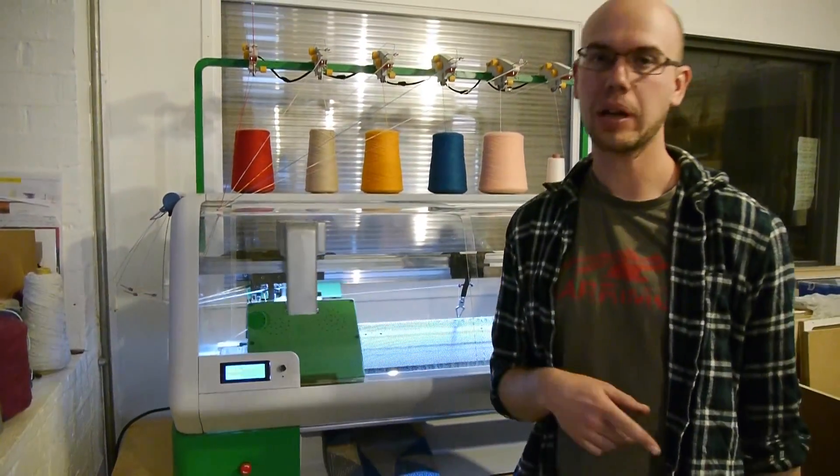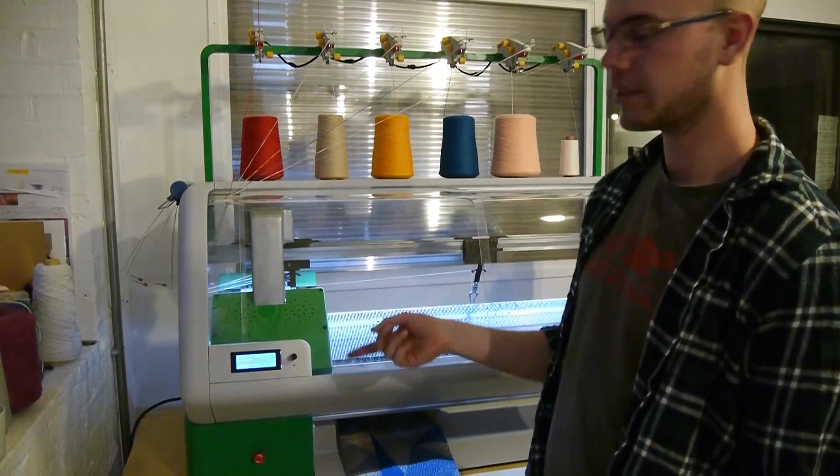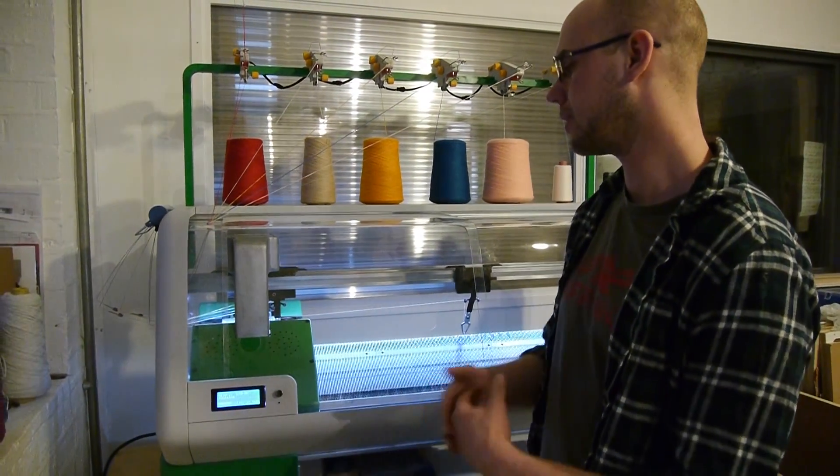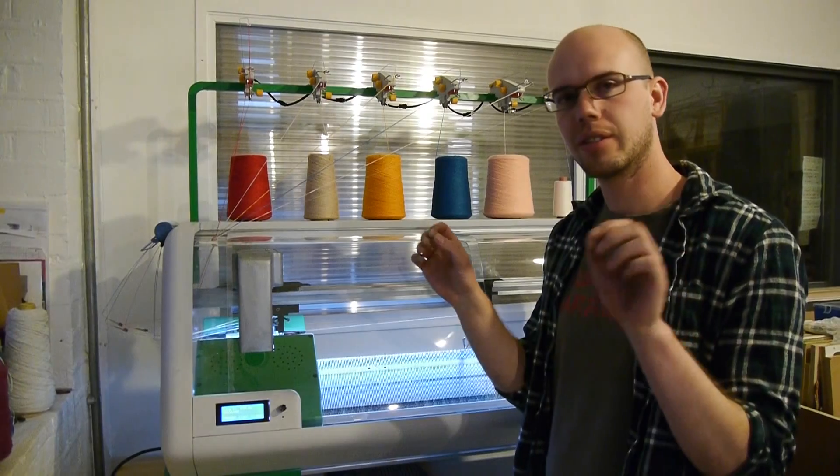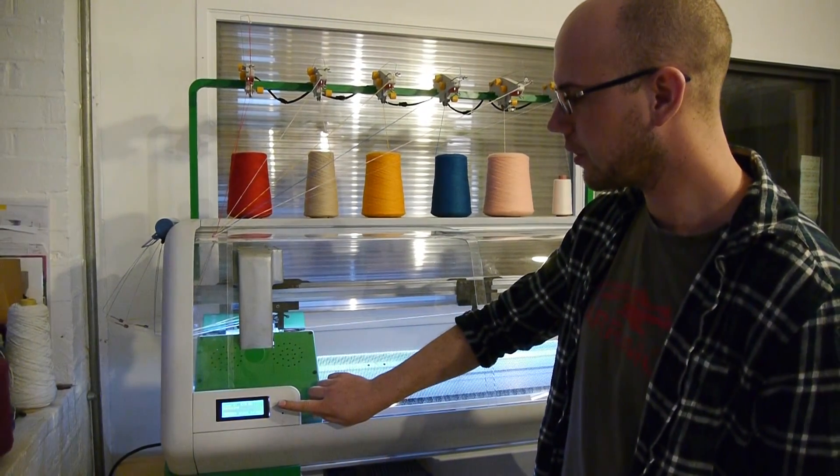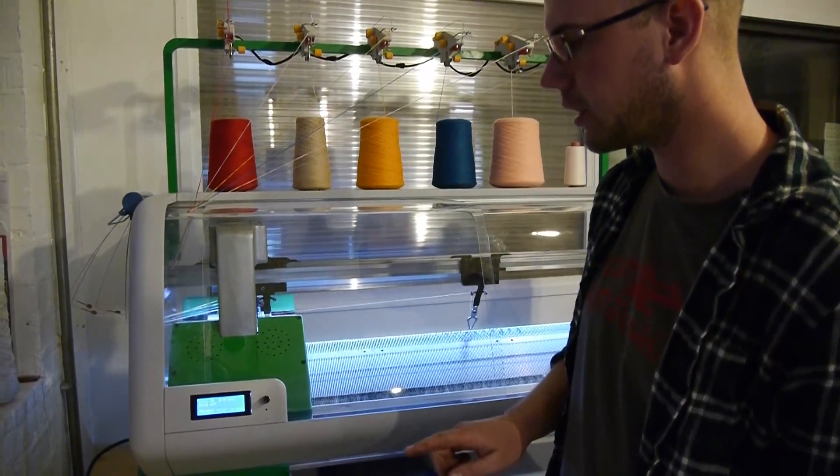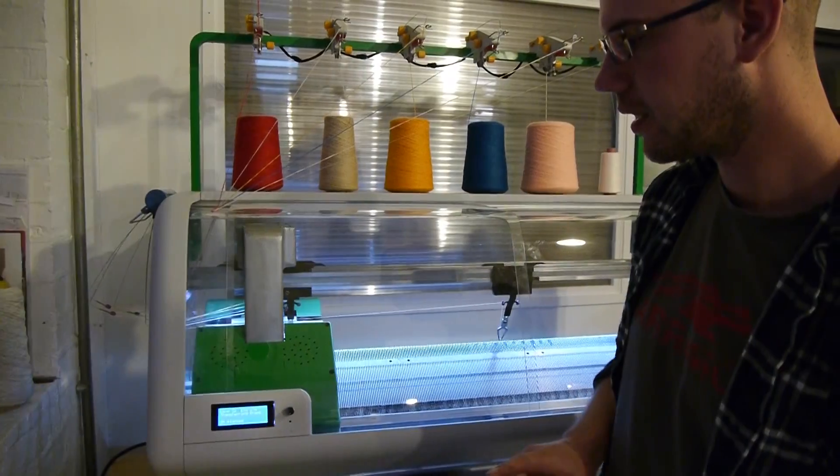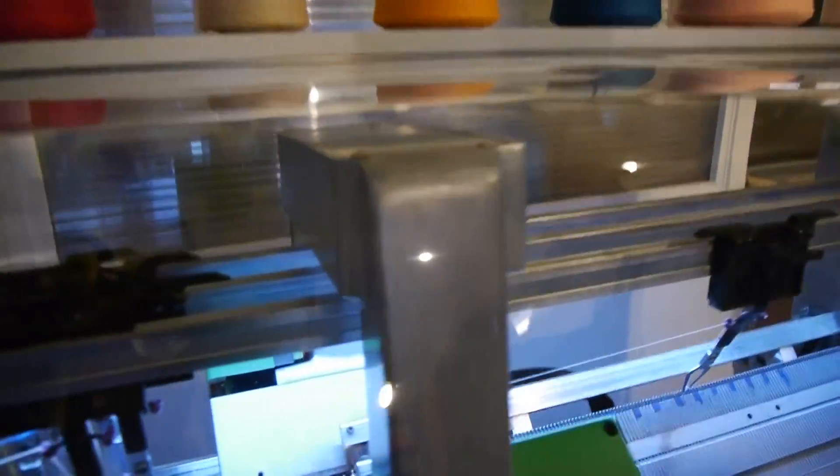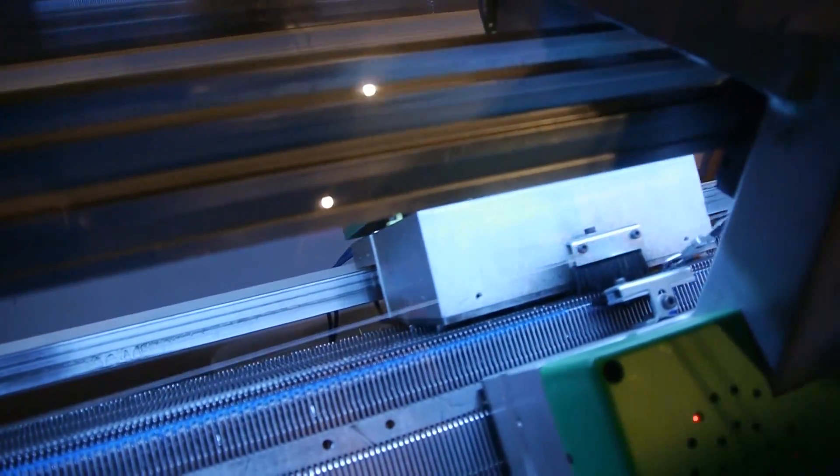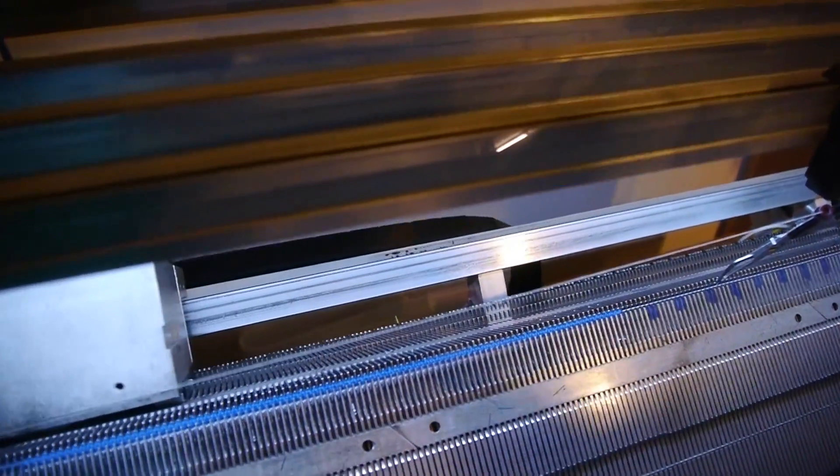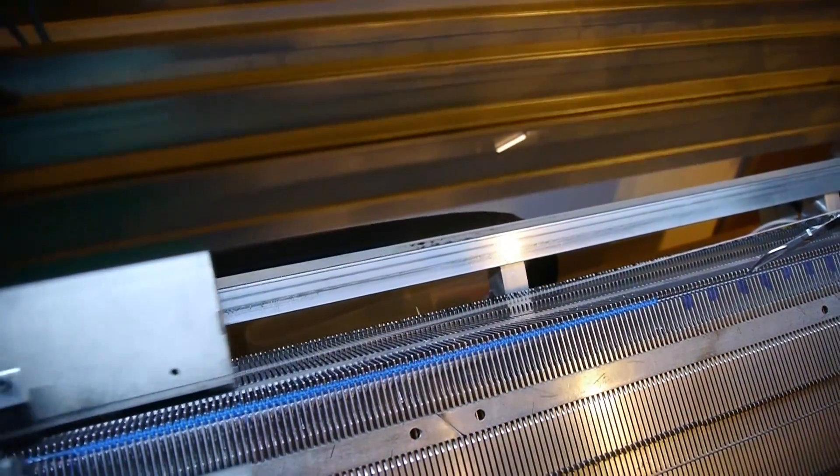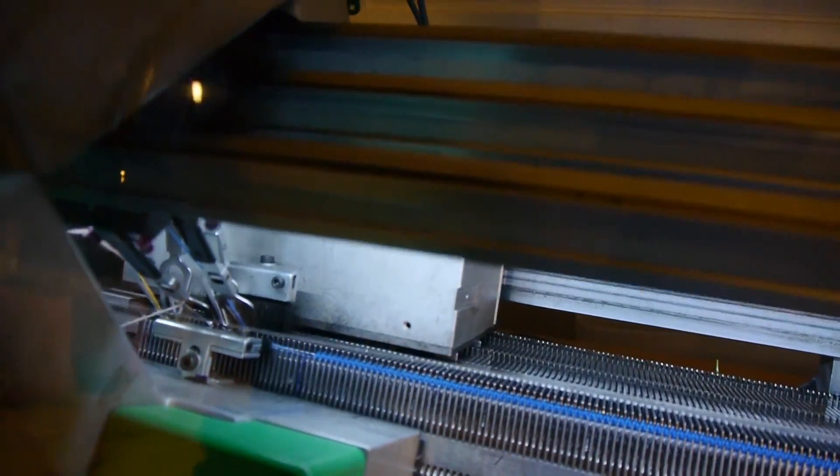So after this, we need to bind off. The machine's going to stop so I can talk about it, but normally it would just carry on and do this. And this is a process of closing the garment so that it doesn't come unraveled. So the machine's going to start doing this, and it's quite a slow process, so it passes all the needles to the, all the stitches to the back, and then it has to kind of join them all through each other. One by one.